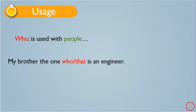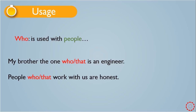'My brother, the one who is an engineer' or 'My brother, the one that is an engineer' — both are correct. 'People who work with us are honest' or 'People that work with us are honest.' We can use either 'who' or 'that' with people.